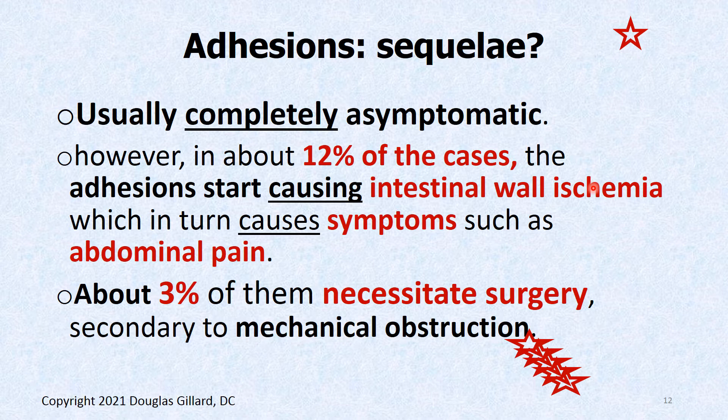Sometimes the adhesion itself doesn't always cause a strangulation. In fact, most of the time it's completely asymptomatic. But if it does cause a strangulation and entangles the intestines to the point you can't move fecal material through, then you're in trouble. The intestinal wall can become so swollen it cuts off the circulation in the intestinal wall, the tissue becomes ischemic, and it can rupture. About 3% of all adhesions ultimately end up requiring a clean-out surgery.